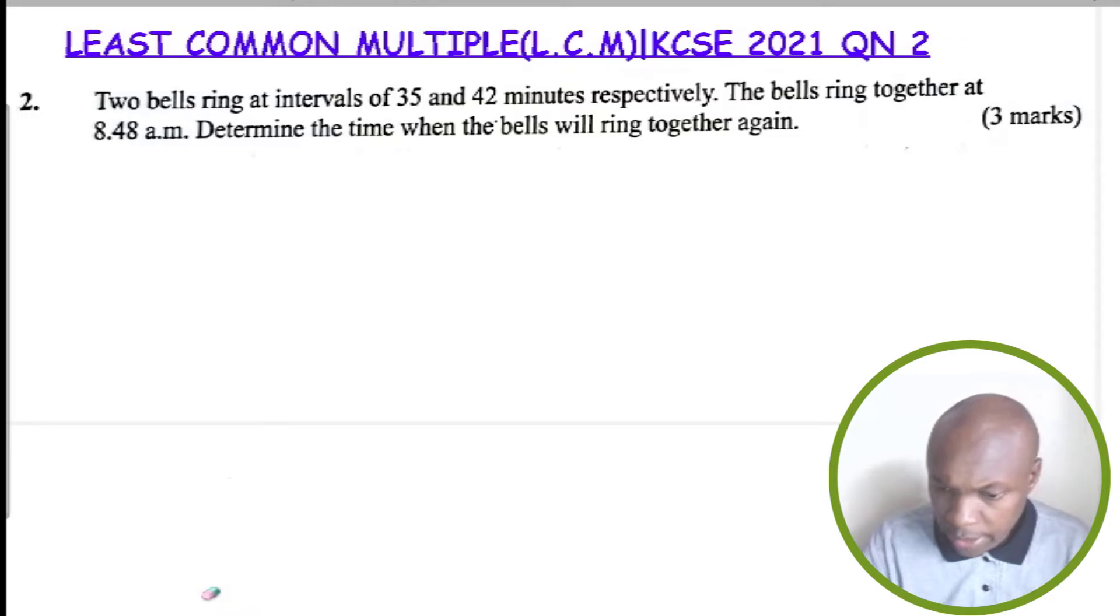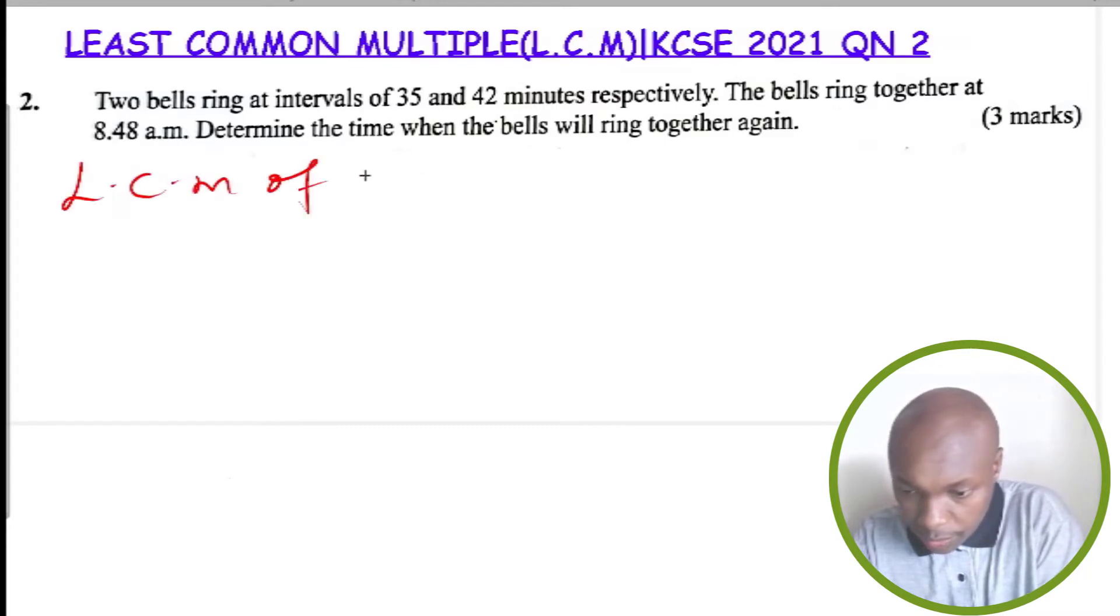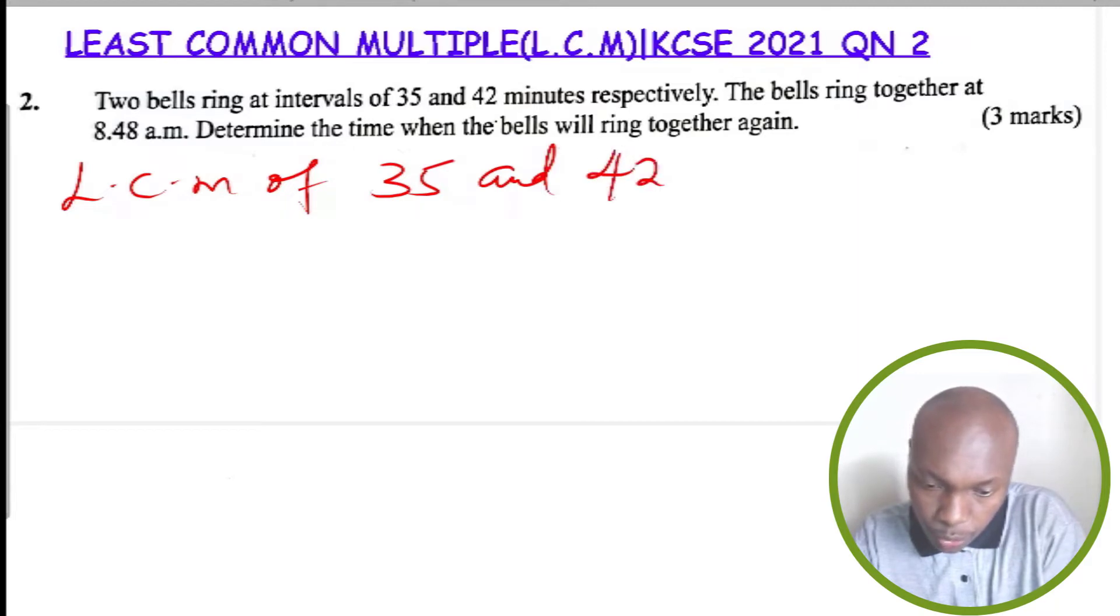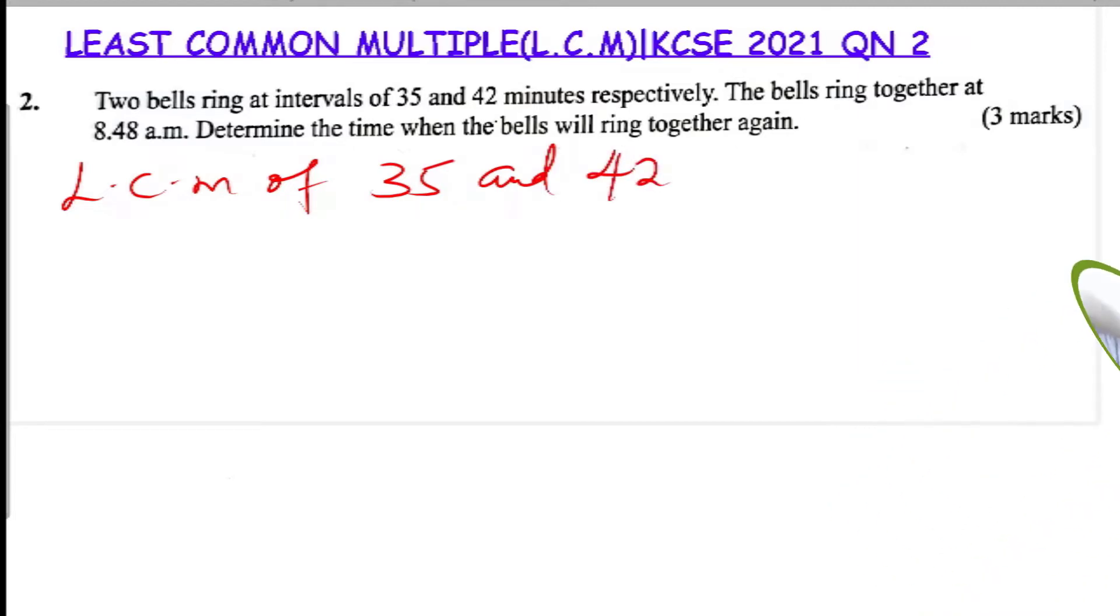In order to find how long they will take to ring back together, we shall get the least common multiple of 35 and 42. So the LCM of 35 and 42 will give us the time in minutes which they will take in order to ring together.